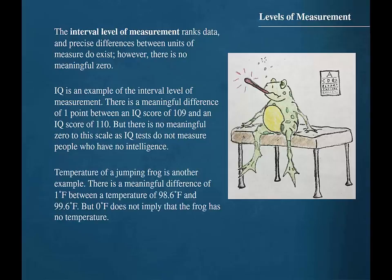Temperature of a jumping frog is another example. There is a meaningful difference of one degree Fahrenheit between a temperature of 98.6 degrees Fahrenheit and 99.6 degrees Fahrenheit, but zero degrees Fahrenheit does not imply that the frog has no temperature.